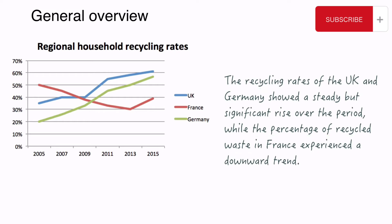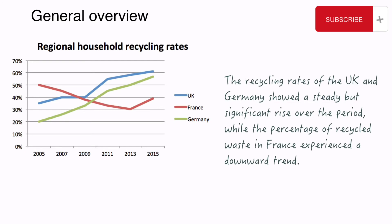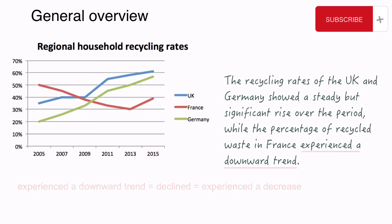Instead of 'showed a significant rise,' I could also use 'rose significantly' or 'showed an upward trend.' And instead of 'showed a downward trend,' I could say 'declined' or 'experienced a decrease.' That's all with our overview.